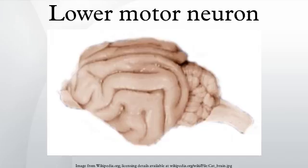Beta motor neurons innervate intrafusal fibers of muscle spindles with collaterals to extrafusal fibers. Gamma motor neurons innervate intrafusal muscle fibers, which together with sensory afferents compose muscle spindles. These are part of the system for sensing body position.